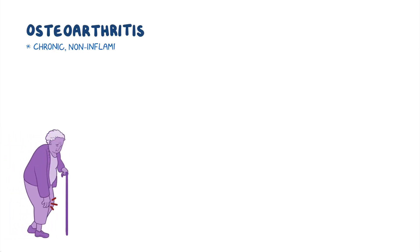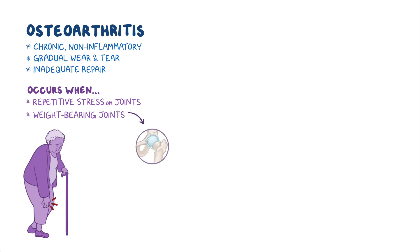All right, as a quick recap. Osteoarthritis is a chronic, non-inflammatory condition, characterized by gradual wear and tear of joint cartilage and underlying bone, followed by inadequate repair. It occurs when repetitive stress on joints, especially on weight-bearing joints like the hip, knee, and ankle, wears away the cartilage between joints, causing pain and impaired mobility.